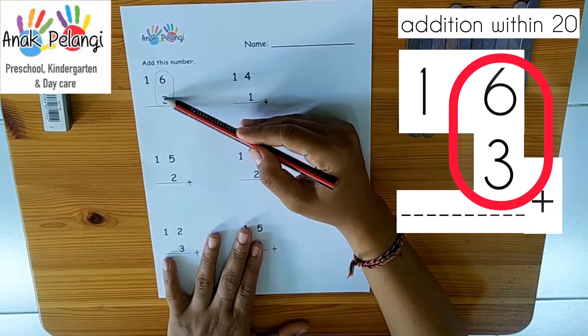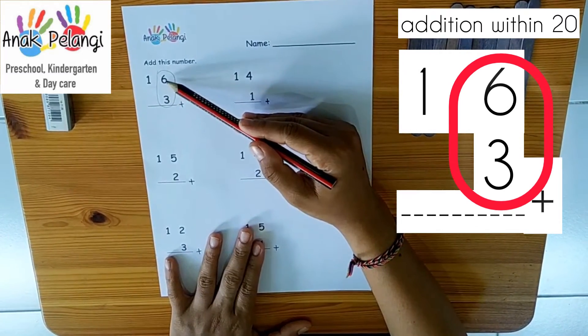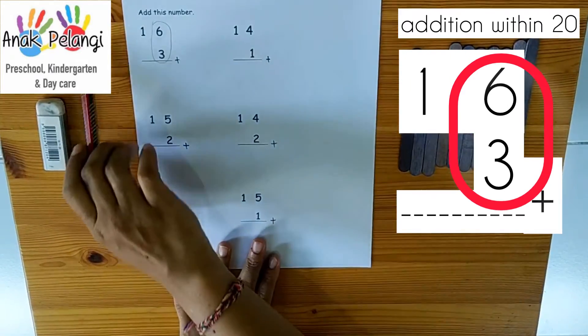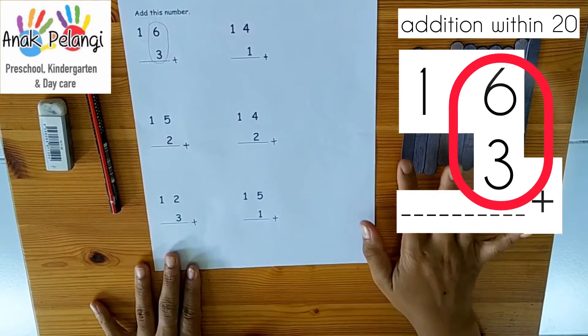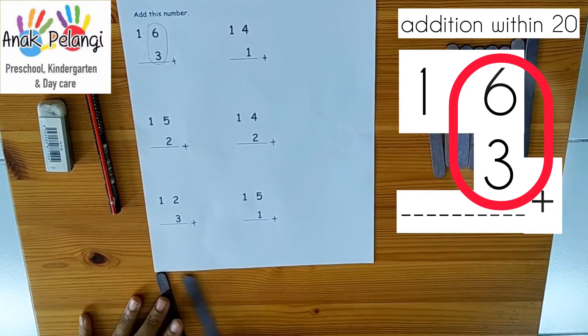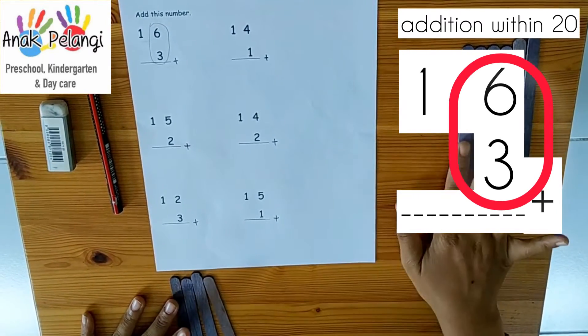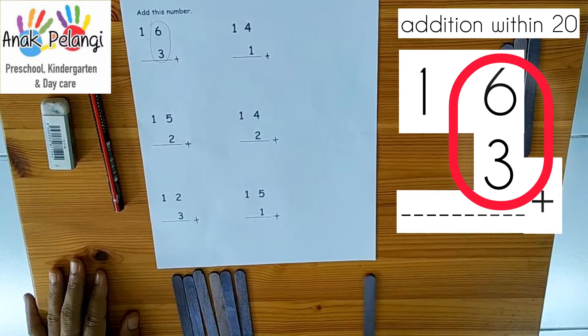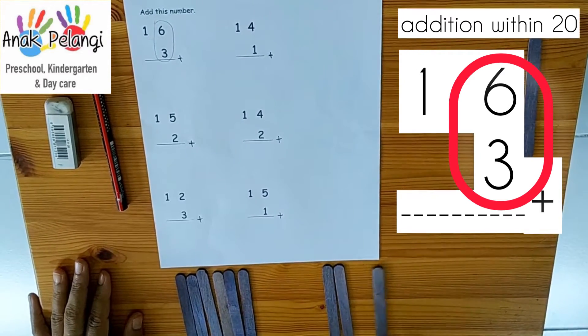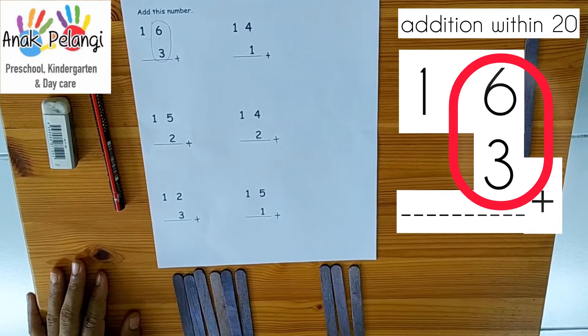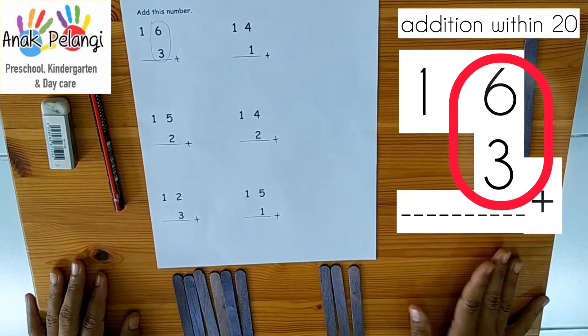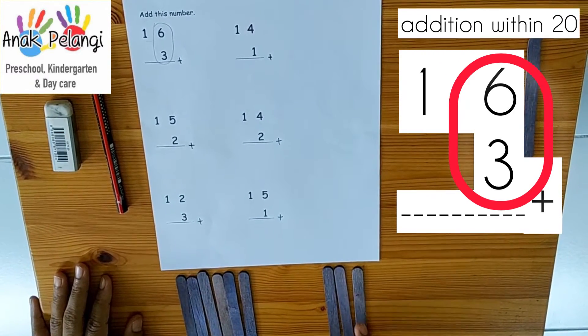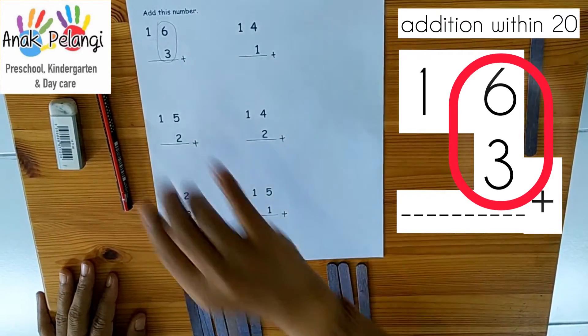Let's add the numbers that I circle. 16 plus 3. 1, 2, 3, 4, 5, 6 plus 3. 1, 2, 3. Let's count all of them. 1, 2, 3, 4, 5, 6, 7, 8, 9. 6 plus 3 is 9.